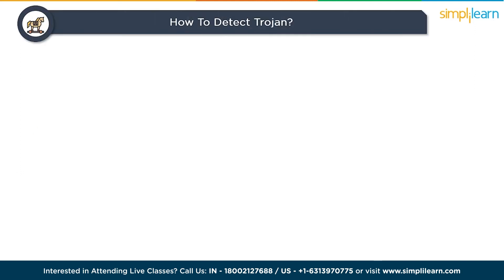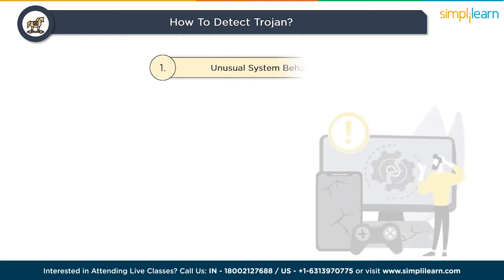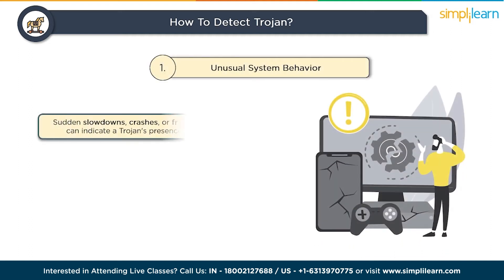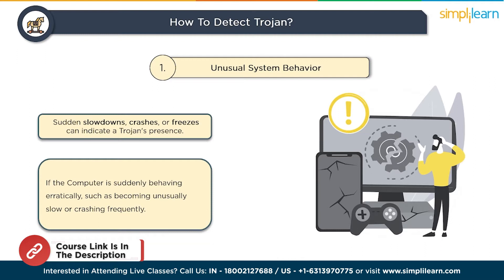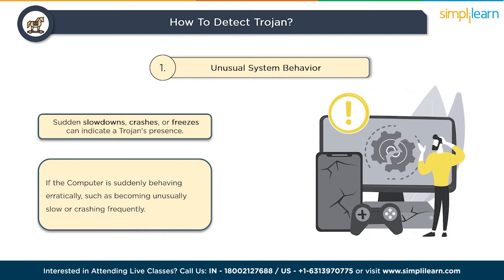Detecting trojans is crucial to safeguarding your system. Some common signs that your computer might be infected include unusual system behavior. Sudden slowdowns, crashes, or freezes can indicate a trojan's presence. If you notice that your computer is suddenly behaving erratically — becoming unusually slow or crashing frequently — it could be a sign that a trojan has infiltrated your system. These behaviors are often a result of the trojan's interference with your system's normal functioning.